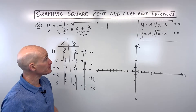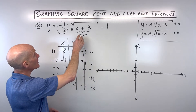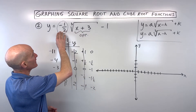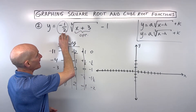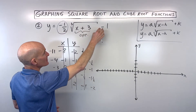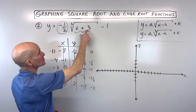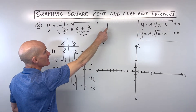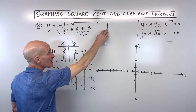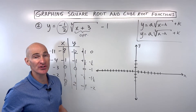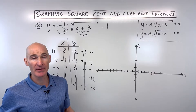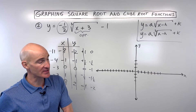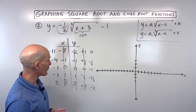Remember, you want to apply transformations in the right order — the a and h first, then the k — or h then a then k — but make sure the vertical shift up or down is done last, otherwise you'll get the wrong graph.